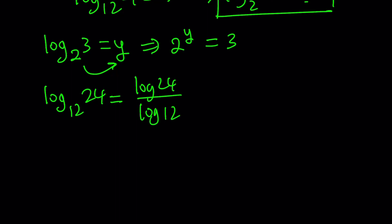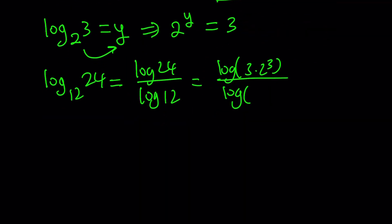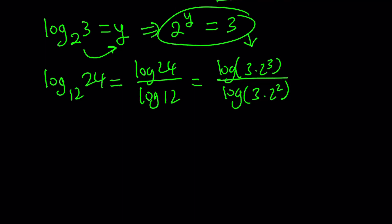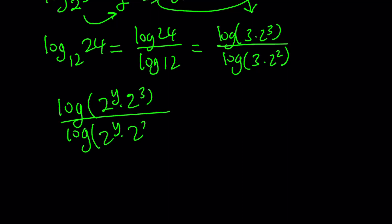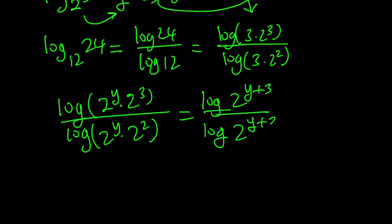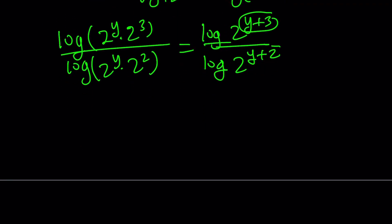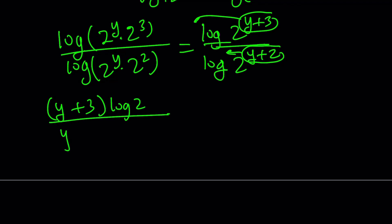We can write 24 as 3 times 2 to the third power, and 12 as 3 times 2 to the second power. Now, instead of separating them like before, I'd like to use the identity 2 to the power y equals 3, replacing 3 with 2 to the power y. That gives us 2 to the power y times 2 to the power 3 in the numerator, and 2 to the power y times 2 to the second power in the denominator. Adding exponents, the numerator becomes 2 to the power y plus 3, and the denominator becomes 2 to the power y plus 2. Using the power property, we can bring these to the front, giving us y plus 3 times log 2 divided by y plus 2 times log 2.